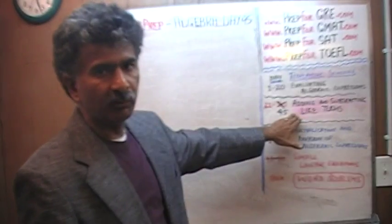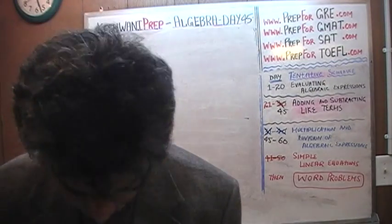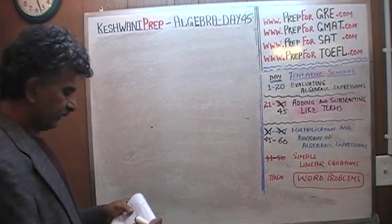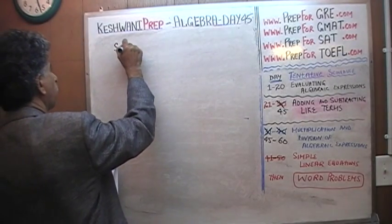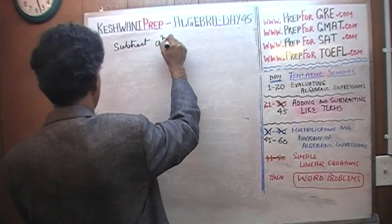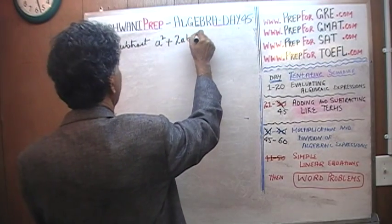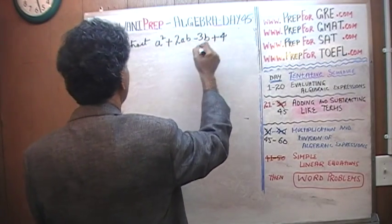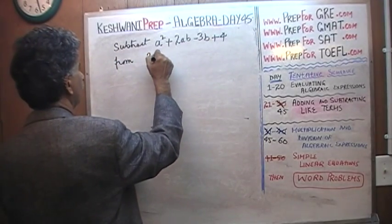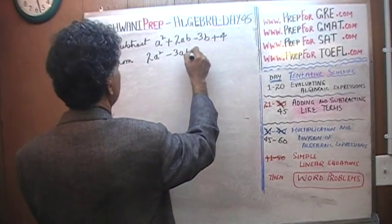We are learning right now how to add and subtract like terms — how to add and subtract algebraic expressions. The problem we have today is very straightforward, very simple. We are asked to subtract a squared plus 2ab minus 3b plus 4 from 2a squared minus 3ab minus 9.